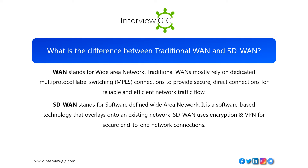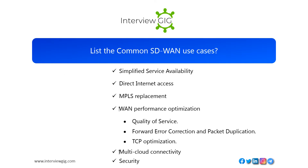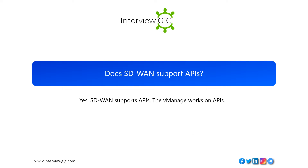SD-WAN uses encryption and VPN for secure end-to-end network connections. Common SD-WAN use cases include: simplified service availability, direct internet access, MPLS replacement, WAN performance optimization, quality of service, forward error correction and packet duplication, TCP optimization, multi-cloud connectivity, and security.